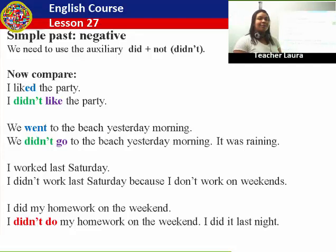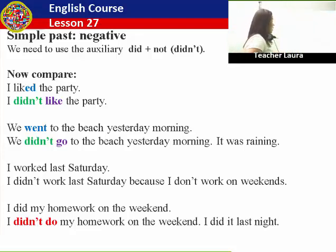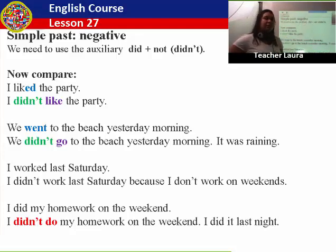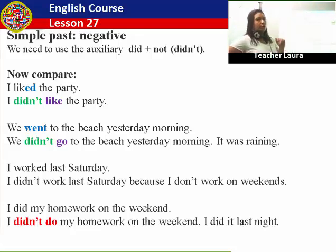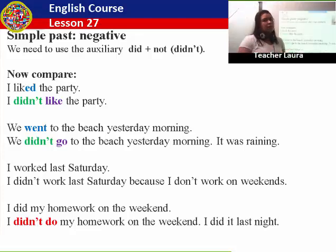Here, the verb 'like' in the past is 'liked'. I liked the party. So, if I want to say it in the negative: I didn't like the party. Did you see what happened? I liked. I didn't like. Let's see the next one. We went to the beach yesterday morning. We didn't go to the beach yesterday morning. It was raining. So, did you notice what happened when I put 'did not' or 'didn't' in the sentences? If I use 'did' or 'didn't' to show the past, I don't need to put the verb in the past too.